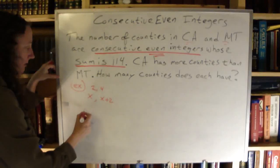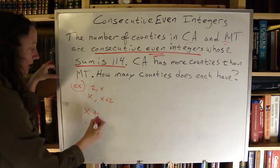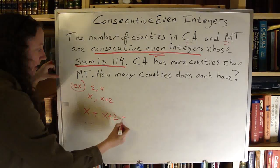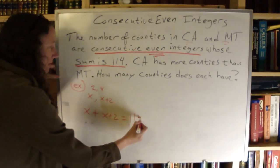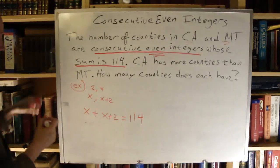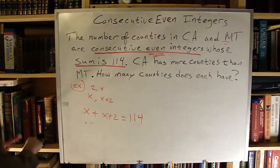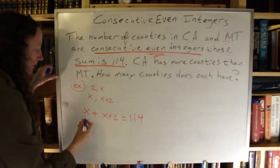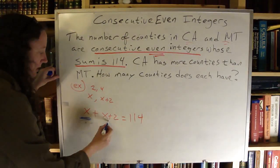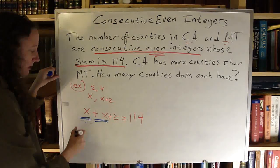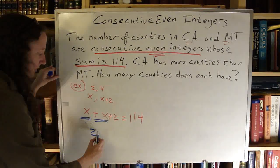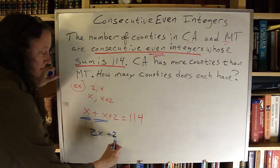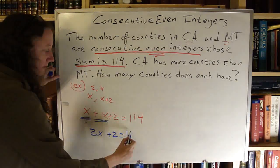So I need to add these together: x plus x plus 2 equals 114. I need to combine my like terms — this term and this term — so that gives me 2x plus 2 equals 114.